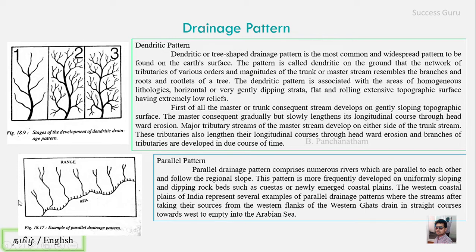The main controlling factors for the parallel drainage pattern are structural control (topography and rock type) and tectonic control, which is the main reason for the parallel alignment of streams.